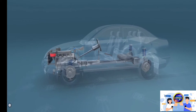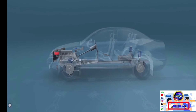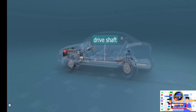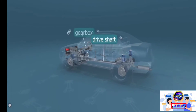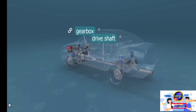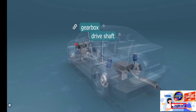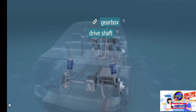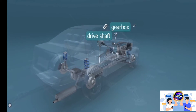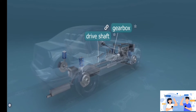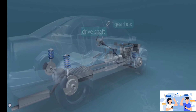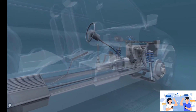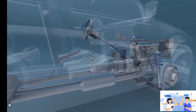The rotating motion of an engine's crankshaft is transmitted to the wheels by the driveshaft. The gearbox changes the number of rotations of the driven wheels during one turn of the crankshaft. In low gear, the output of the engine is high but the speed is low. In high gear, the car is faster and uses less fuel.